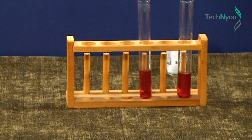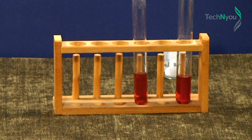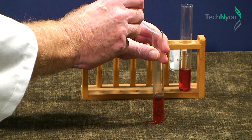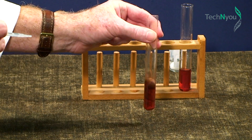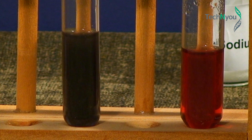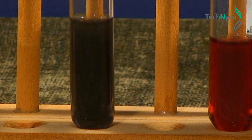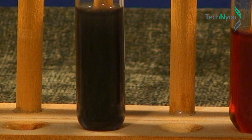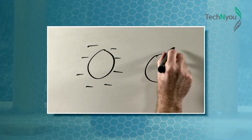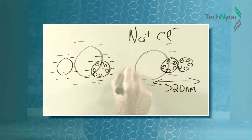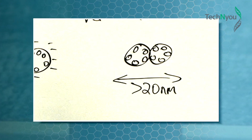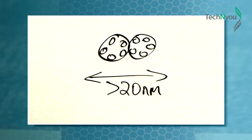We will now increase the size of the nanoparticles and observe how that impacts their colour. Here in the test tube holder are two samples of the particles we've just produced. We add a few drops of sodium chloride solution to one test tube, shake it, and observe the results. The left-hand test tube is now darker. Adding sodium chloride disturbs the electrostatic sheath around each nanoparticle, resulting in positive attraction between nanoparticles, agglomeration, and therefore particles larger than 20 nanometres.